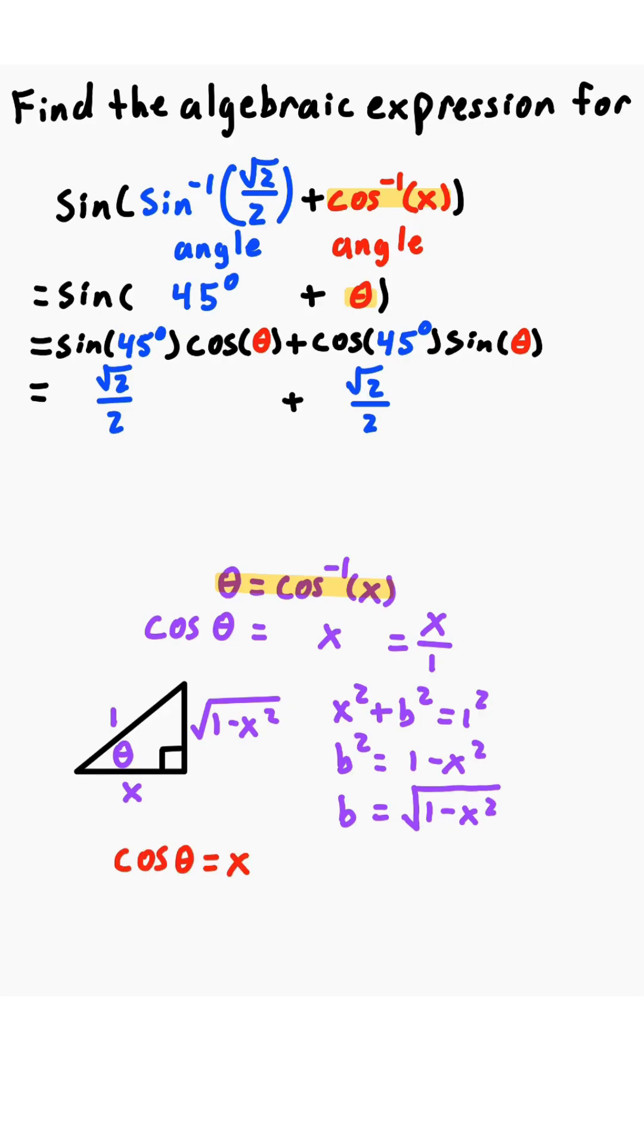So from this, we have cosine of theta equals x, that's what we have earlier. And now we have sine of theta to be the square root of 1 minus x squared, the opposite side over 1, the hypotenuse, which simplifies to the square root of 1 minus x squared.